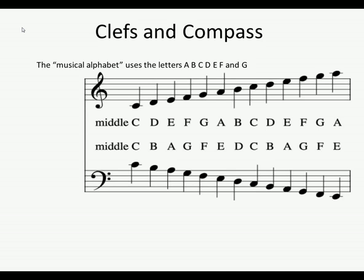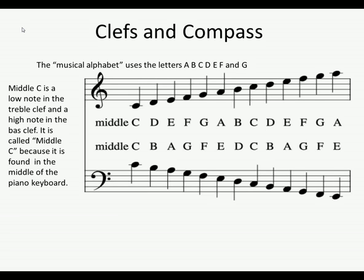You can see the treble clef and the bass clef. The lowest note written here in the treble clef is called middle C. The highest note written here in the bass clef is also called middle C, and this is exactly the same note. Middle C is a low note in the treble clef and a high note in the bass clef. It is called middle C because it is found in the middle of the keyboard.